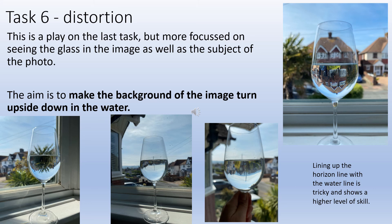For task six, I want you to play around with the glass again, but this time look at how the image turns upside down in the water depending on how far away you have the background and your camera lens. You need to play around with that sense of distance between the glass, the background, and the camera lens. You can try to line up the horizon line if you've got one in the picture, and you can look at creating amusing spectacles. If you'd like to stick to landscapes or objects, that's absolutely fine too.